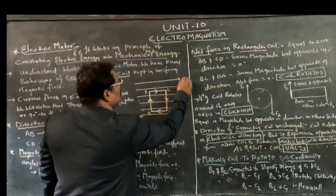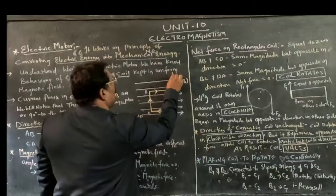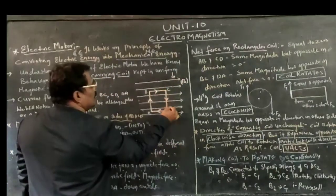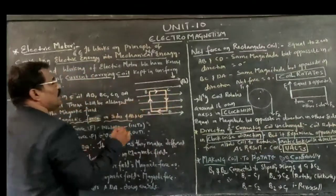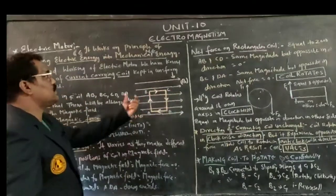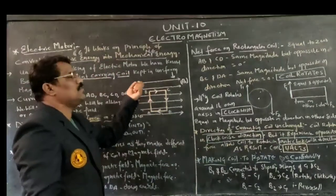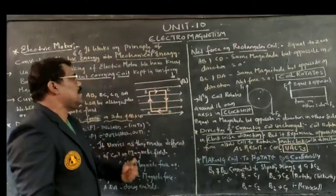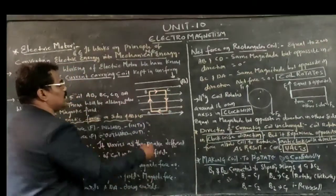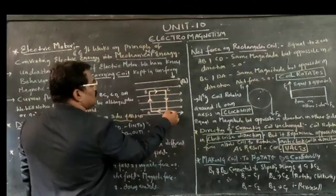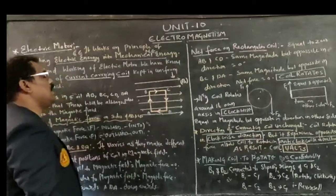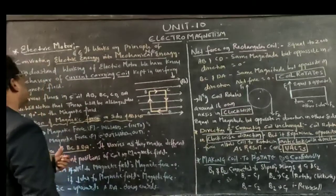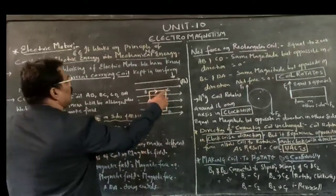This is a uniform magnetic field. In that particular uniform magnetic field, I have placed a rectangular coil A, B, C, D. The working of the electric motor gives information about the current-carrying coil — current flows A to B, B to C, C to D, and D to A, flowing through the coil in all these different directions.